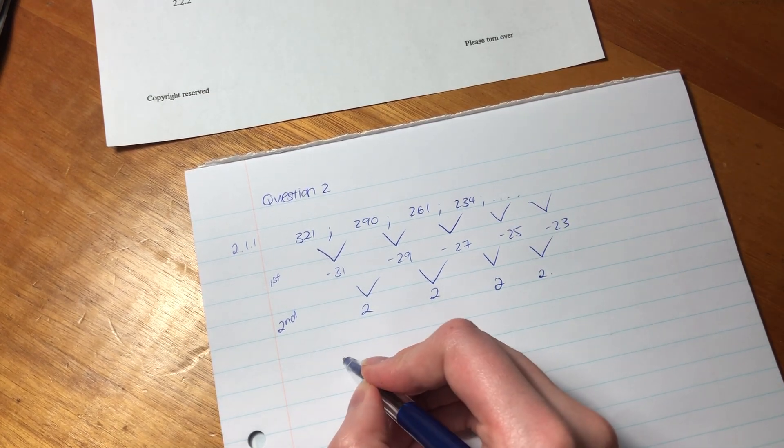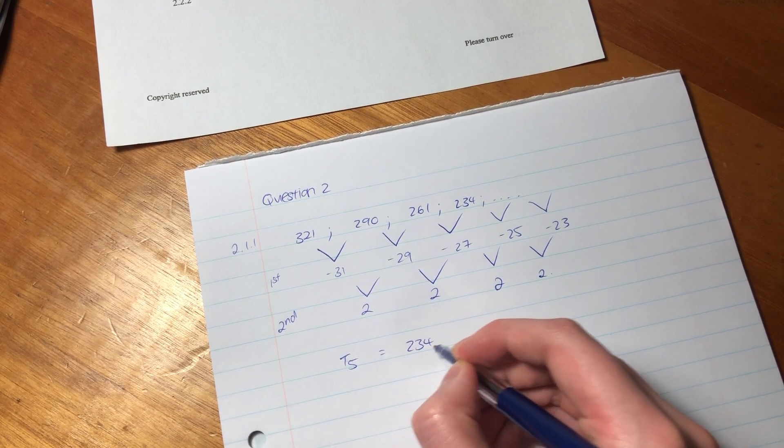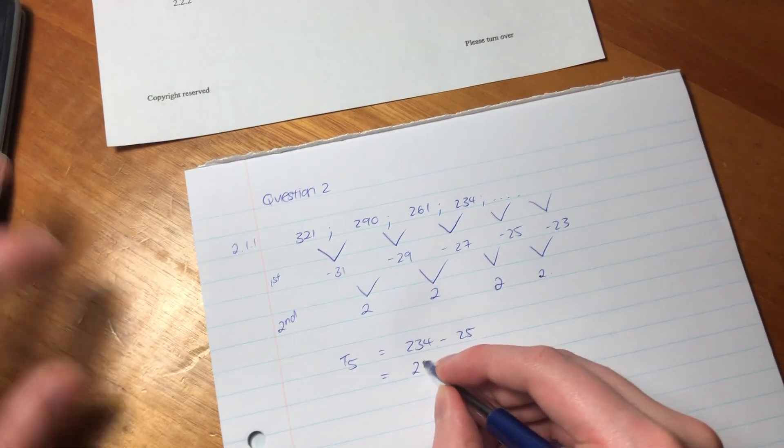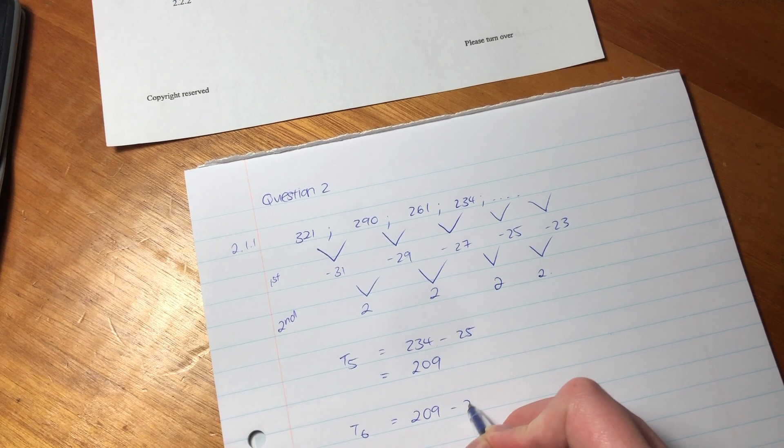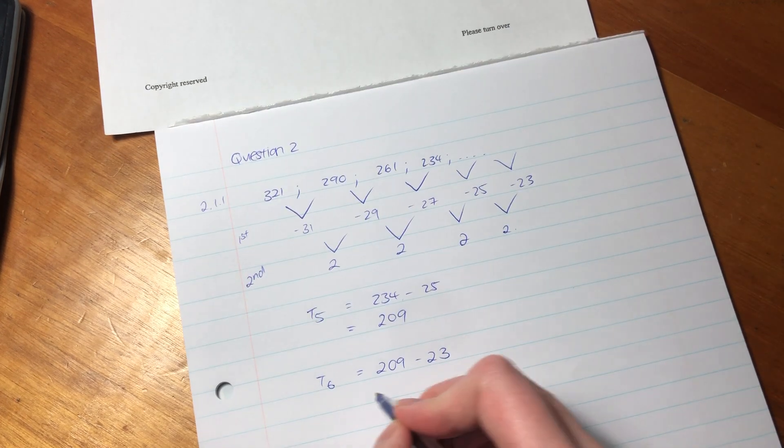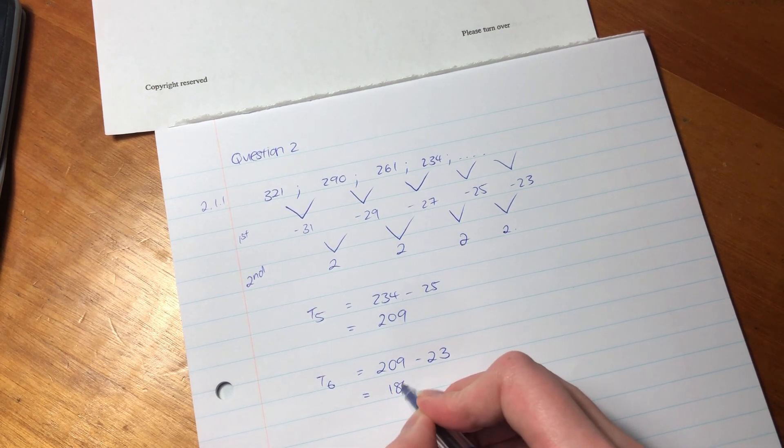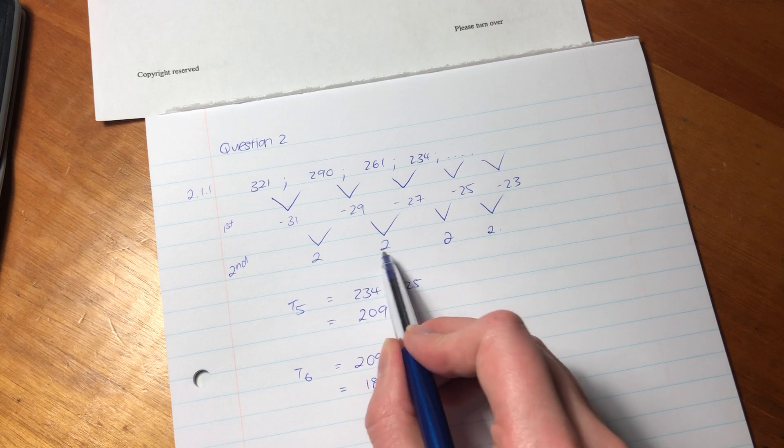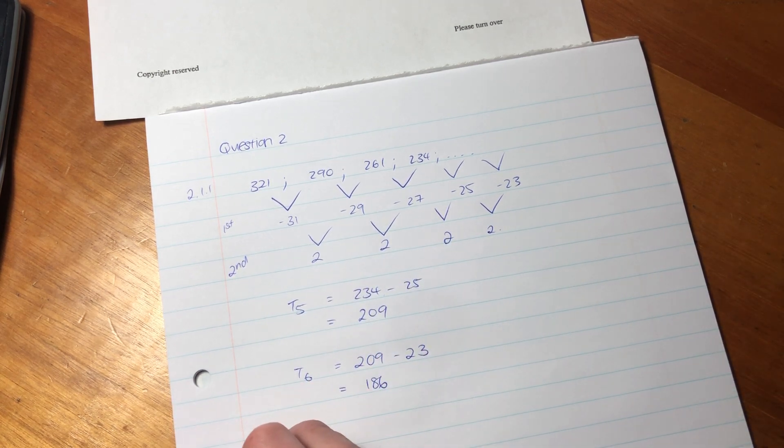So, that would be negative 31, negative 29, negative 27. So that minus that actually gives me 2. So now what we're going to do is we're going to perpetuate this forward to get our next steps.